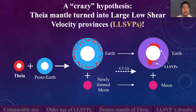The first time I thought about this question, I immediately had this kind of crazy hypothesis that Theia could have turned into large low shear velocity provinces above the core-mantle boundary layers in the Earth.